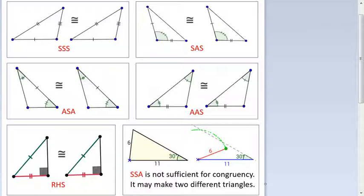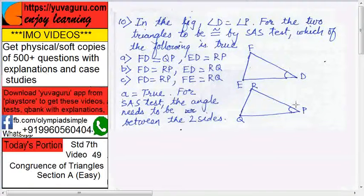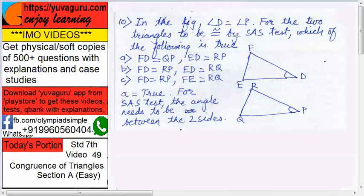In the figure, angle D equals to angle P. For the two triangles to be congruent by SAS test, which of the following is to be true? This picture sometimes creates a false impression. Check the question correctly.